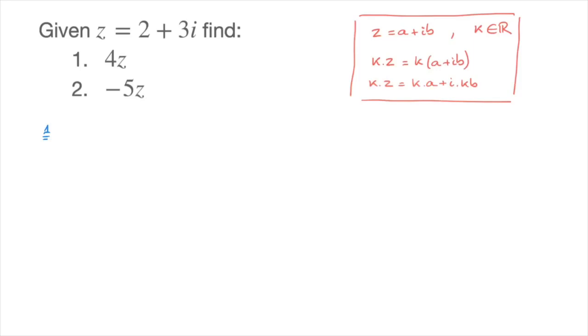Question 1, we need to find 4z. So 4 times z is equal to 4 times, in parentheses, 2 plus 3i.